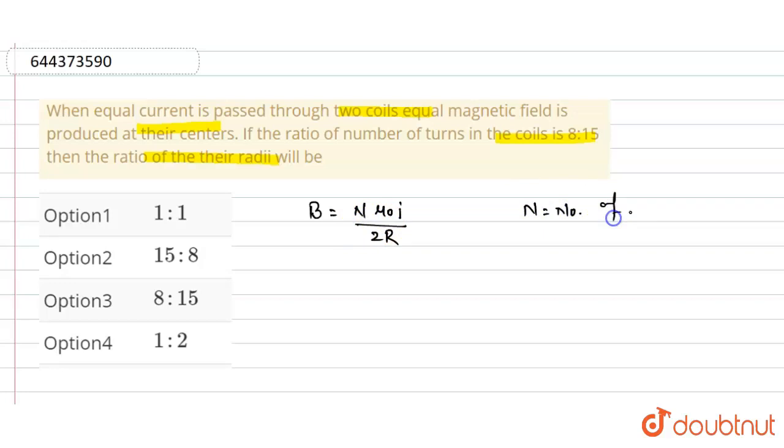In this question it is given that the value of number of turns, that is N1 divided by N2, is equal to 8 by 15, and we have to find the ratio of their radii, that is R1 by R2.